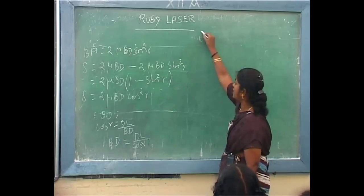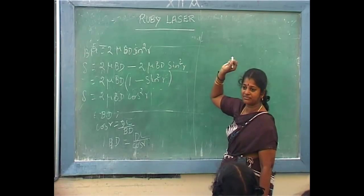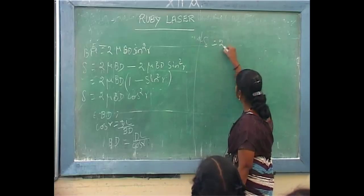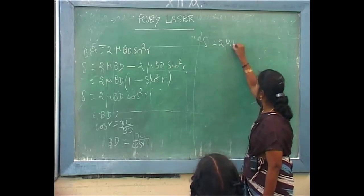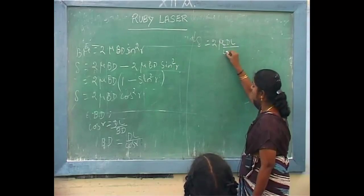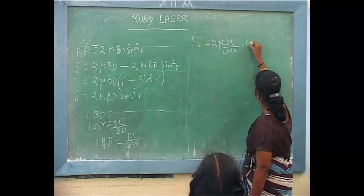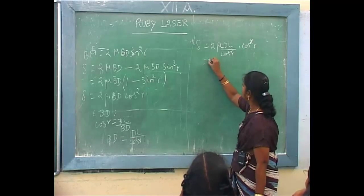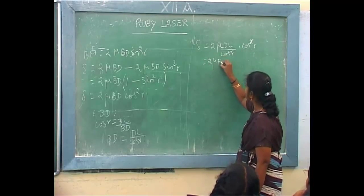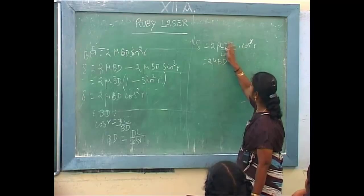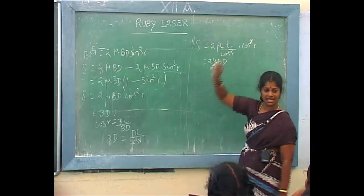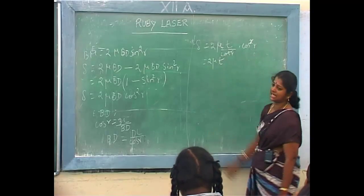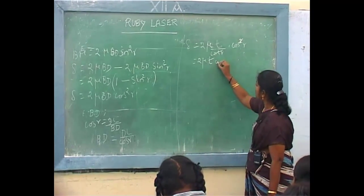So delta is equal to 2μ — for BD, substitute DL by cos R — into cos²R. Therefore, one cos R gets cancelled. You will get 2μ DL cos R. DL will be equal to T, the thickness of the film. So for DL, I will write T, giving 2μT cos R. This will be the path difference between the two rays which are coming out and interfering, forming a colour film on the surface of the water.